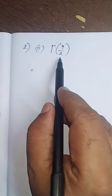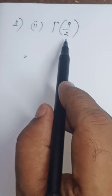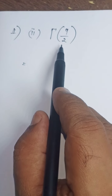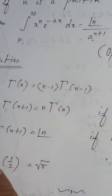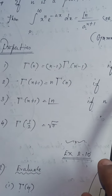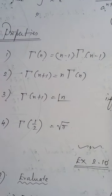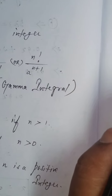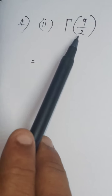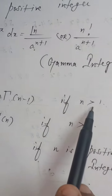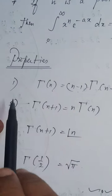9 by 2 is not a positive integer. 9 by 2 is greater than 0, so it is a positive number. In that case, we have to apply the property. Property number 2, or you can apply property number 1, because 9 by 2 equals 4.5, which is absolutely greater than 1. So we can apply property 1 or 2. I am going to apply 1. I will write the property here.